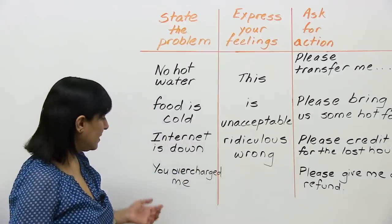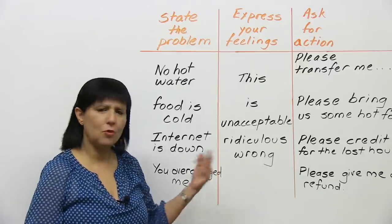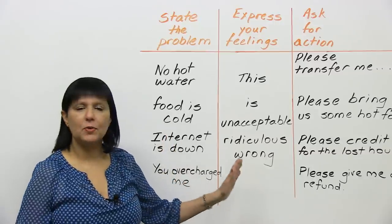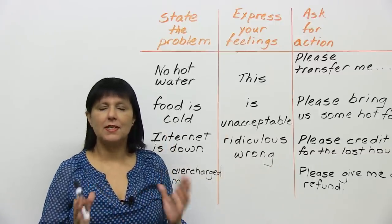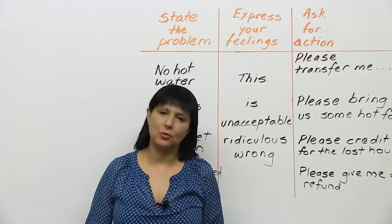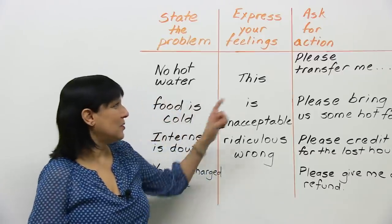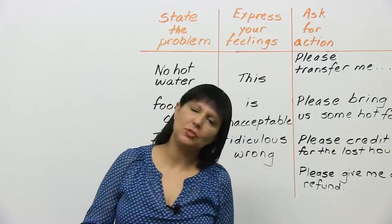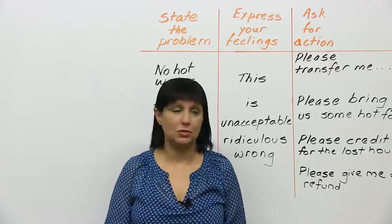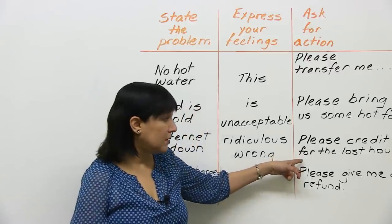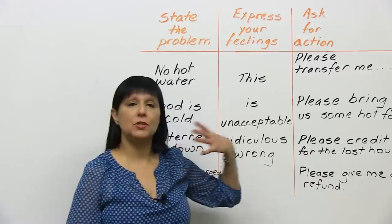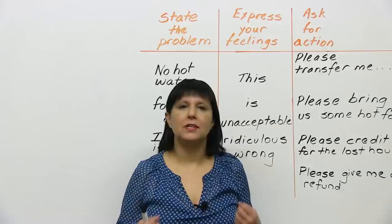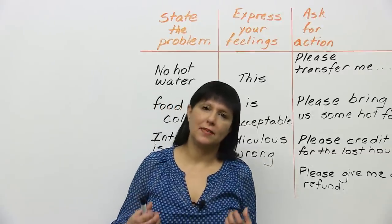Another example: you overcharged me for this item. This is wrong. Please give me a refund. By following this three-step process, it's a very easy way to complain about anything you're having a problem with. Remember, don't forget to ask for action, because without that, people may come up with a solution you don't really like. You want to make sure people do what you want — give you a refund, or credit you for the hours you lost. By stating what you want, there's a much greater likelihood the problem will be fixed in a way that satisfies you.